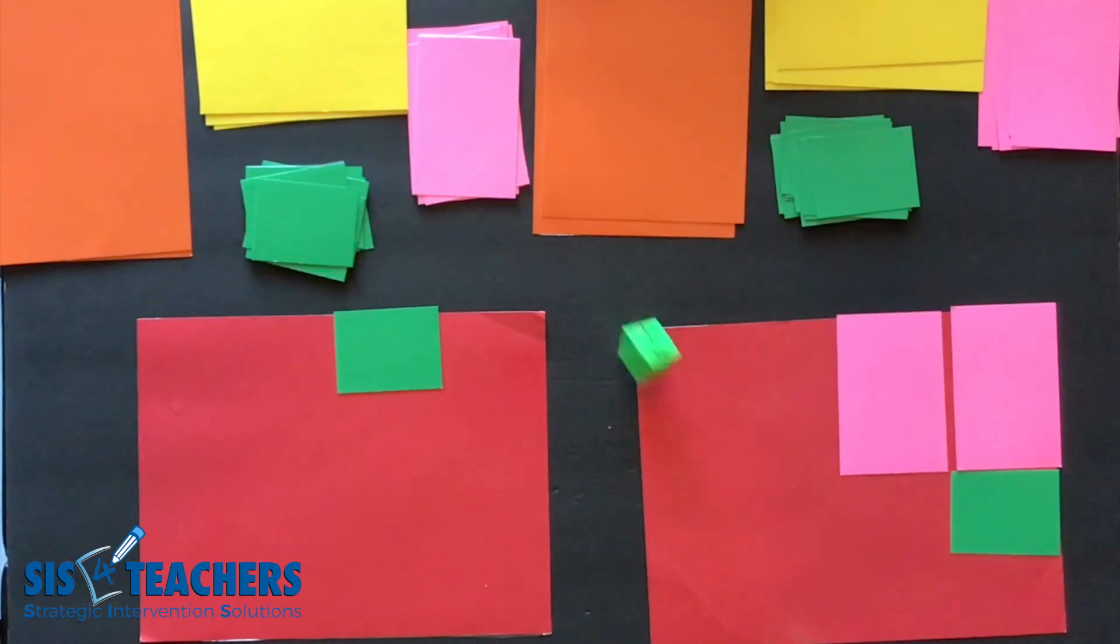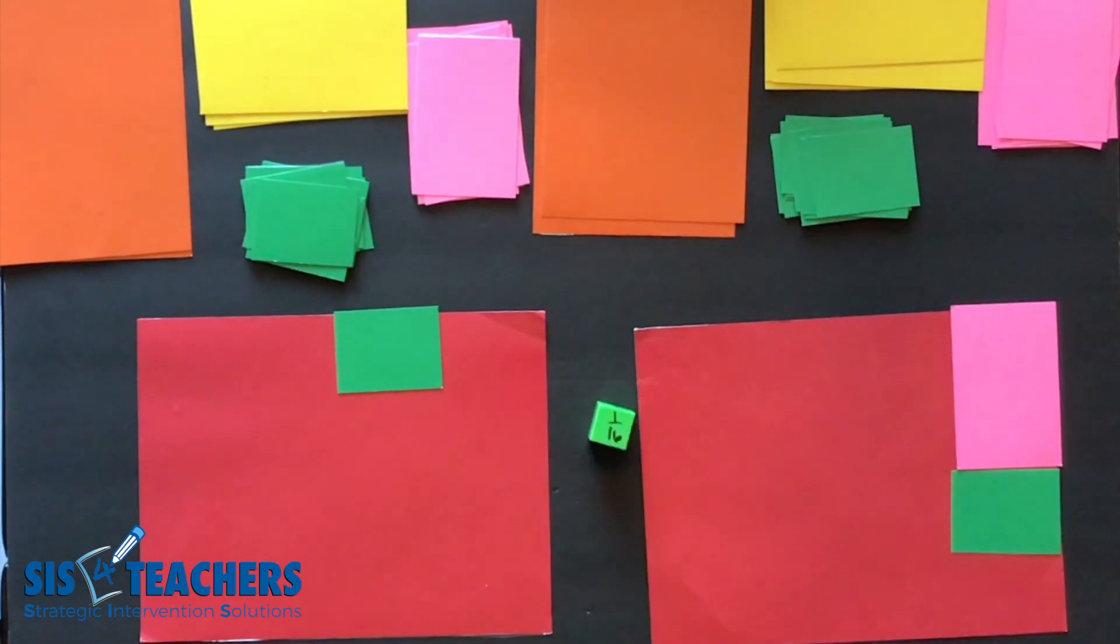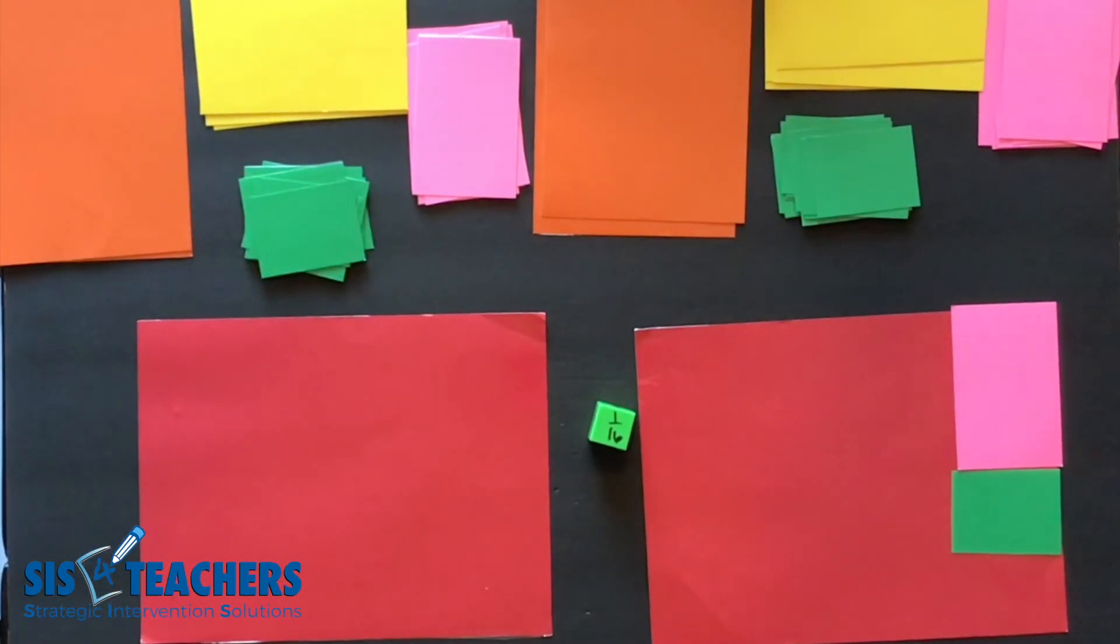I end up getting one eighth which is a benefit to my partner because she wants to continue to get hers out. I got lucky got that one sixteenth and I have completely uncovered my whole.